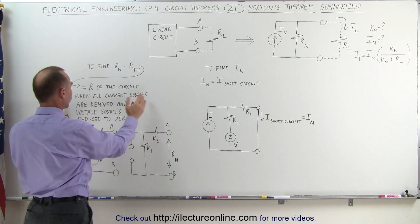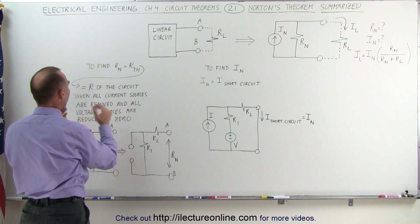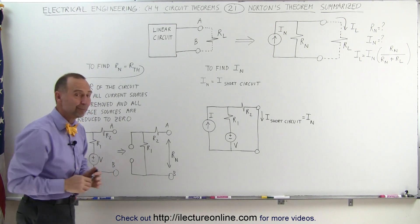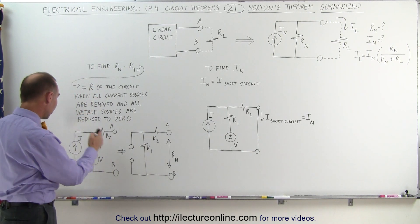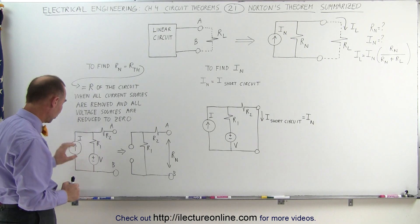The resistance of the circuit when all the current sources are removed and all the voltage sources are reduced to zero. If we have a representative circuit, like right here, that has a current source and a voltage source, we simply remove the current source.